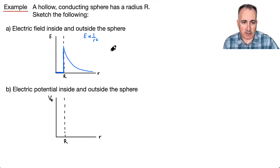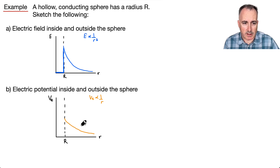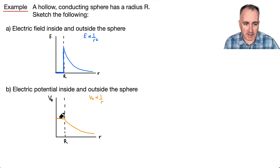What about the electric potential? VE is proportional to 1 over R, so outside it goes something like this. But over here inside, it's going to be constant — something flat like this, and then down outside.